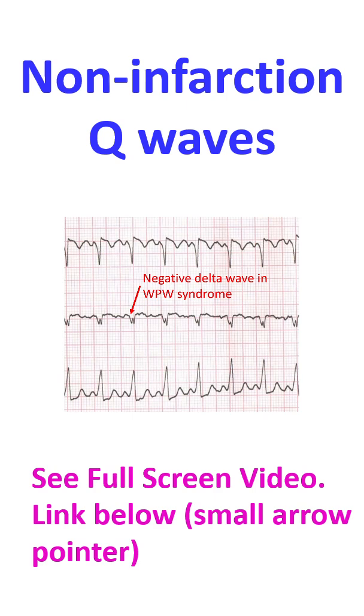Q waves can occur in hypertrophic cardiomyopathy, myocarditis, tumors, sarcoidosis, and amyloidosis.